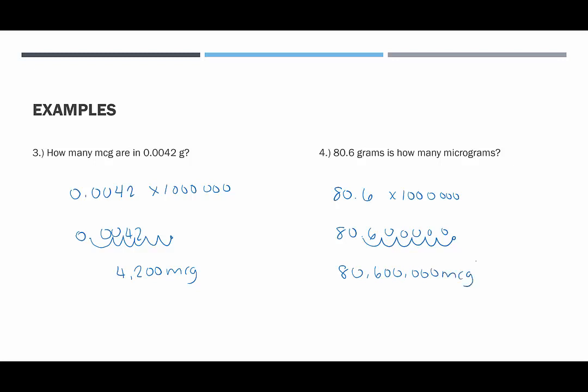These have been examples of converting grams into micrograms by moving the decimal point six places to the right, or by multiplying by one million. Thank you for stopping by.